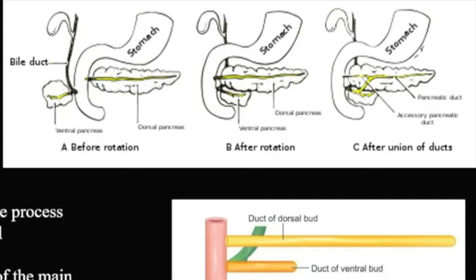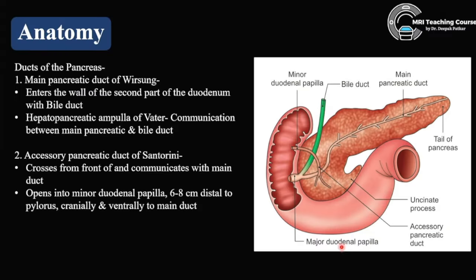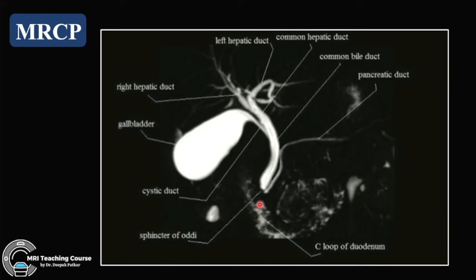This is the main pancreatic duct and this is the accessory pancreatic duct. Coming back to the anatomy, this pictorial depiction shows the main pancreatic duct and the accessory pancreatic duct. The main duct with the common bile duct forms the hepatopancreatic ampulla of Vater. The accessory pancreatic duct is called the duct of Santorini — it opens into the minor papilla, while the main duct opens into the major papilla.